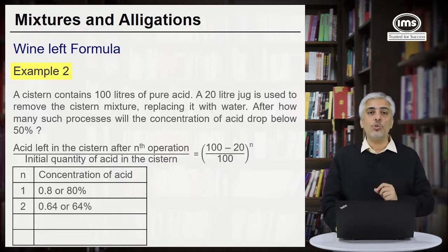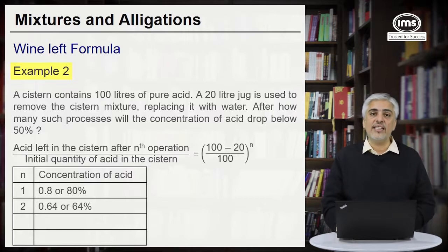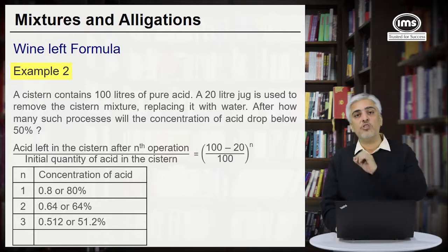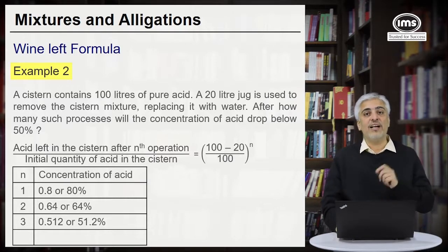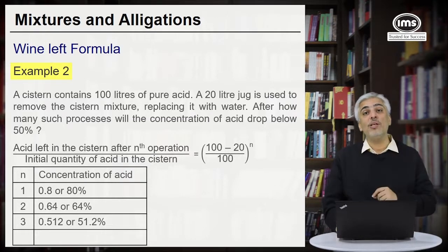So when n is 2 you will have 0.64 or 64 percent. Why? Because you have done 80 percent of 0.8. So 64. In third case it will become when n is 3 it will be 80 percent of 0.64, it will become 512 divided by 1000. So 0.512 or 51.2 percent. So we still haven't gone below 50 percent.